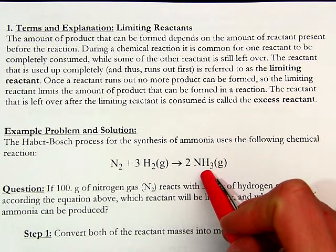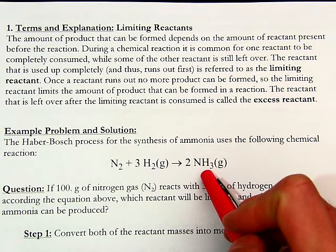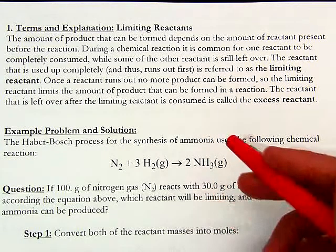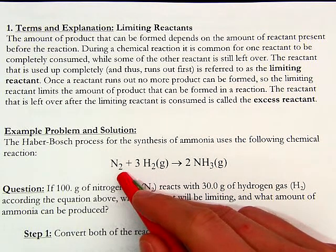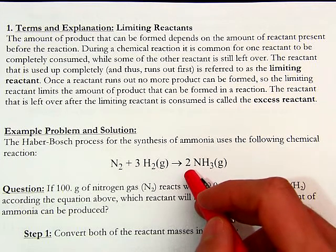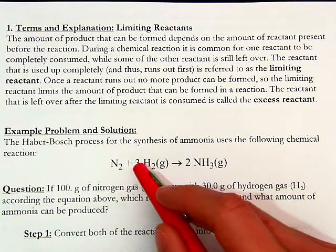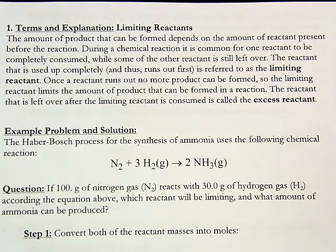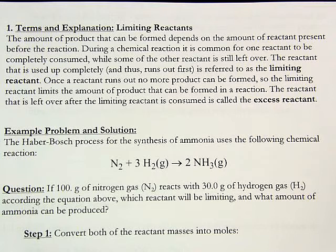Limiting reactant stoichiometry is figuring out, if you know how much of both reactants you have, which one is going to run out first — that's the limiting reactant — and whichever one's limiting determines how much product you can make. In previous mole-to-mole and mass-to-mass problems, they gave you information about one reactant. When that happened, you were just assuming there was an excess of the other reactant — assuming the other reactants are not going to run out before the one they gave you.